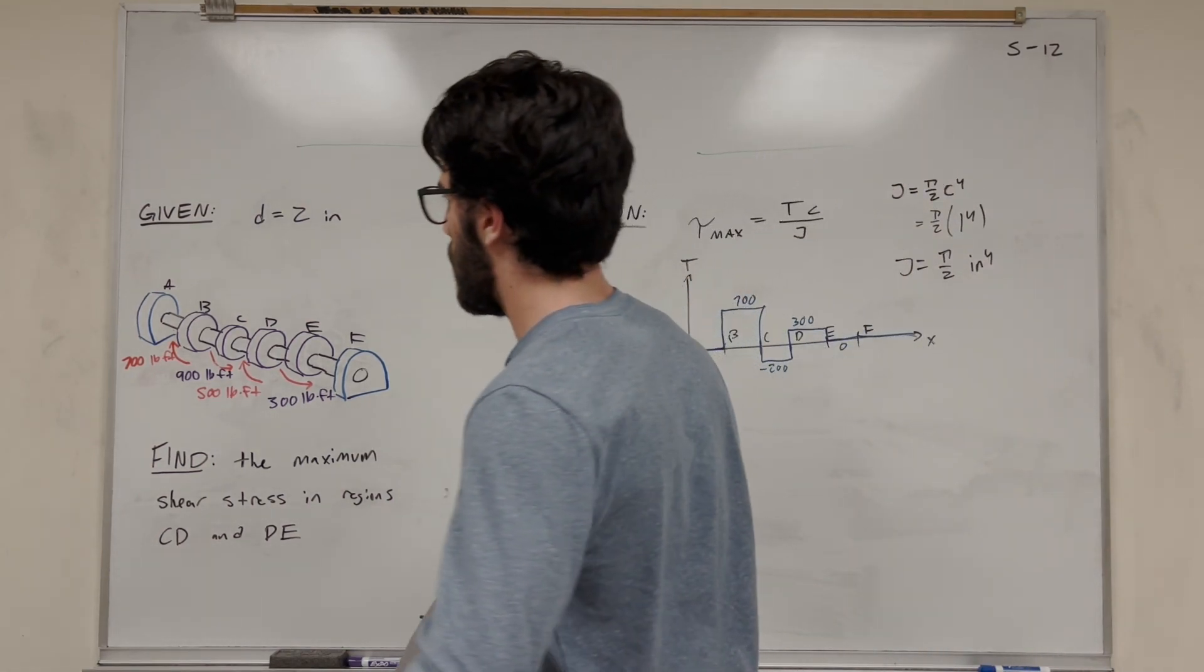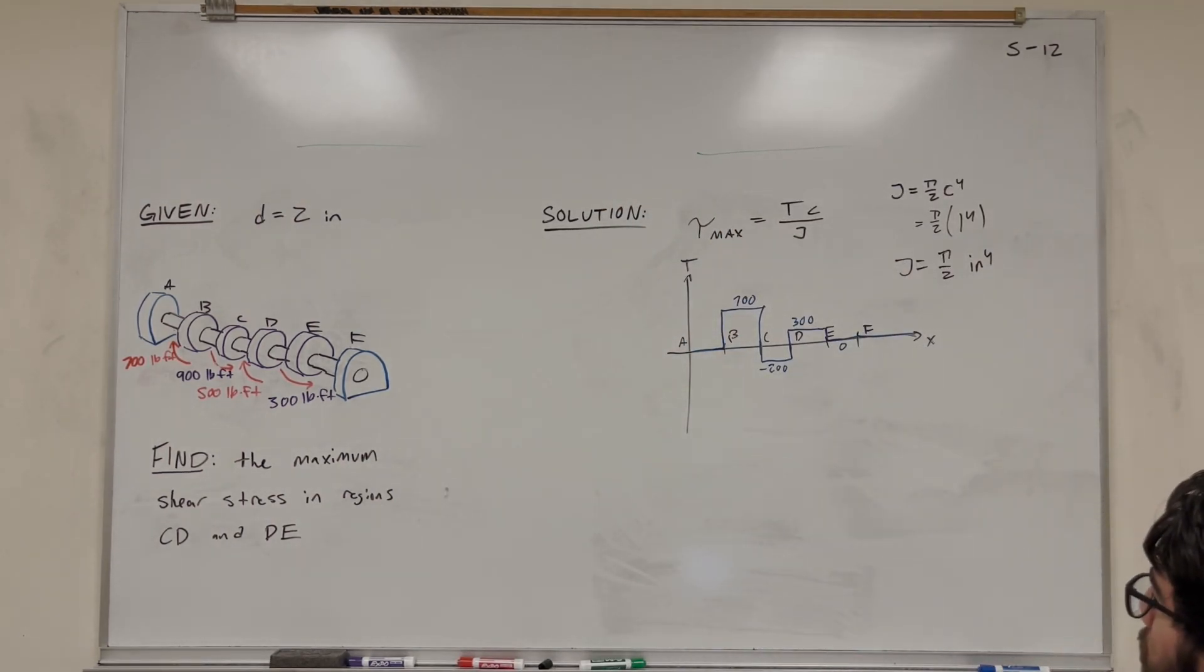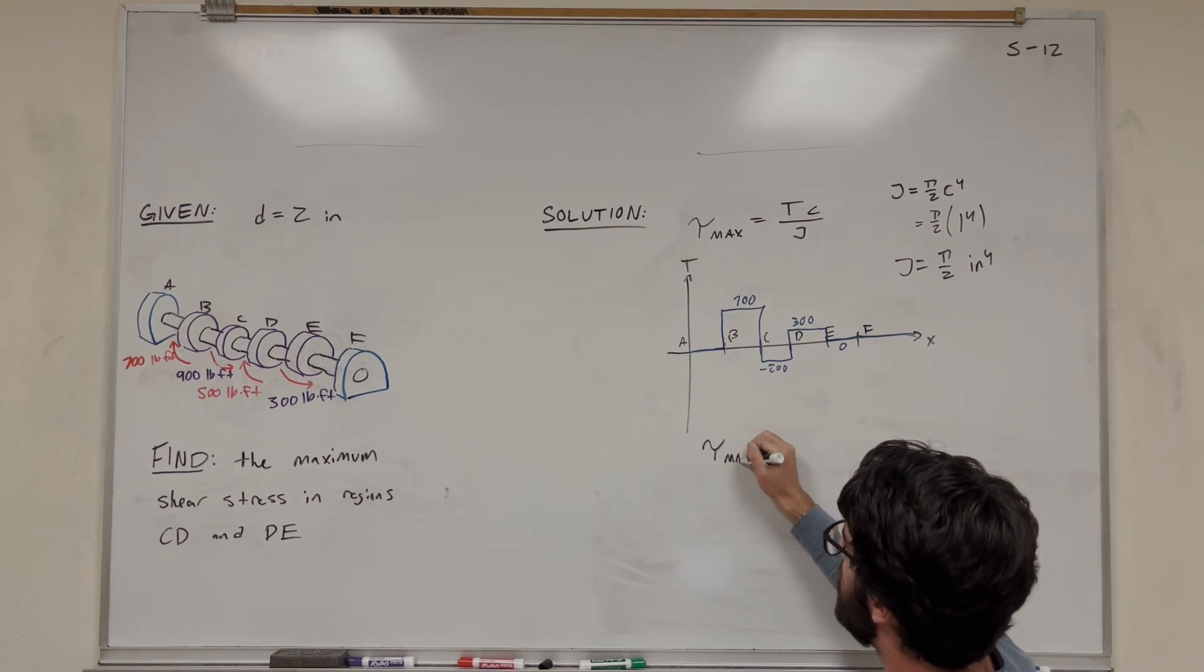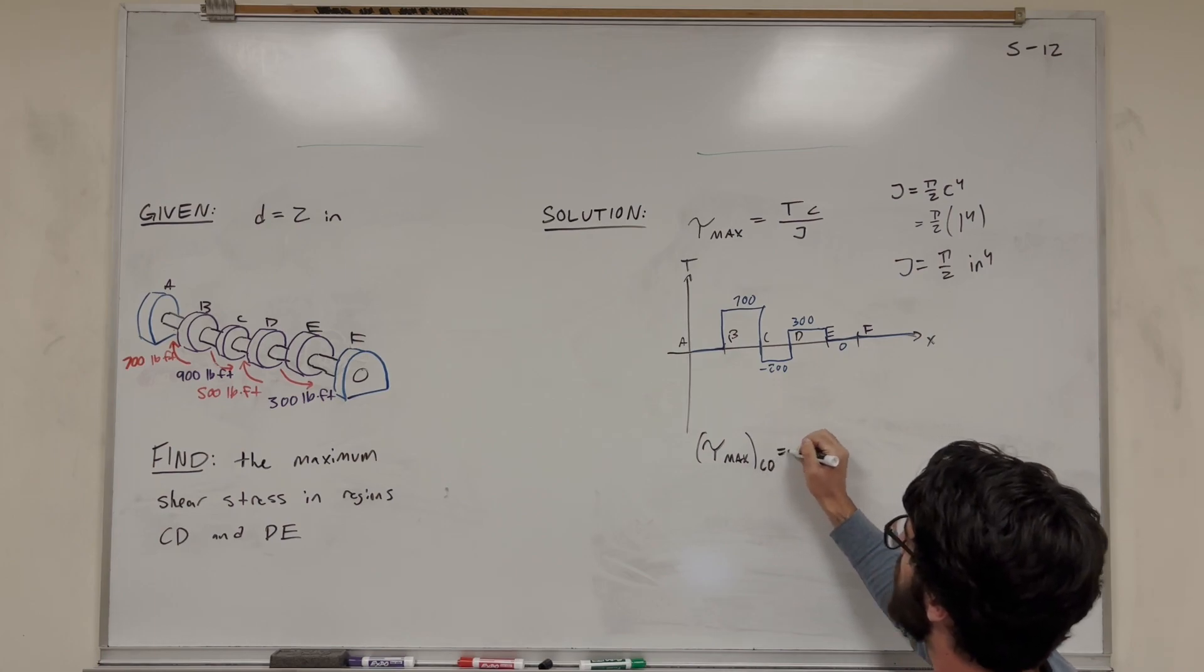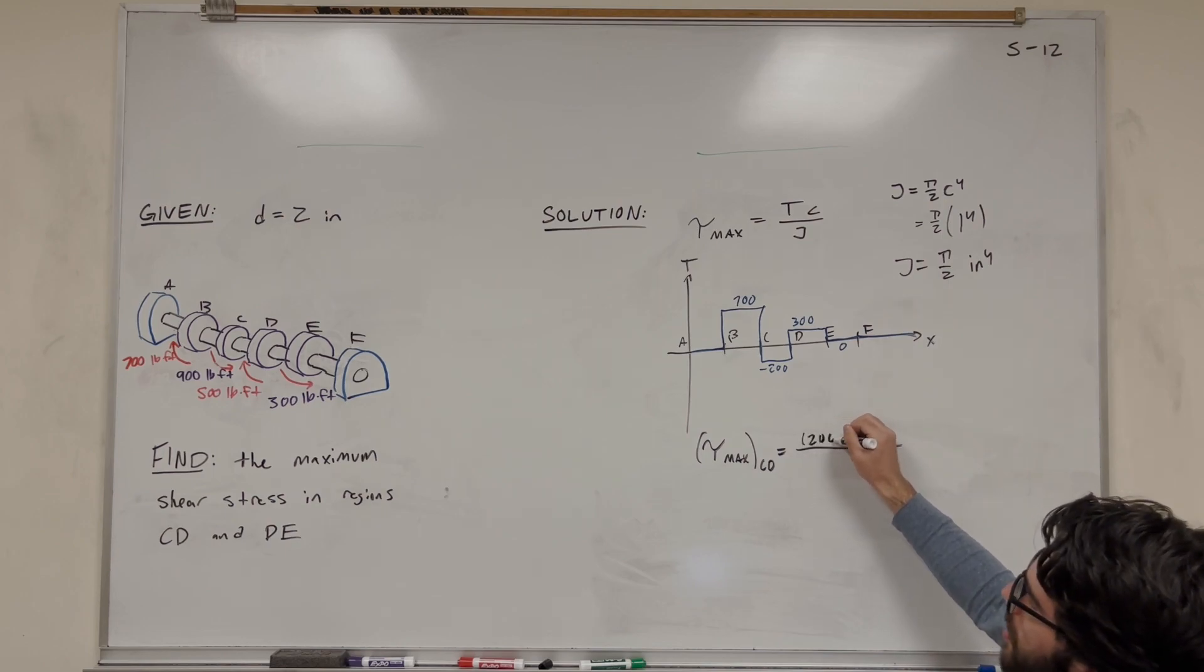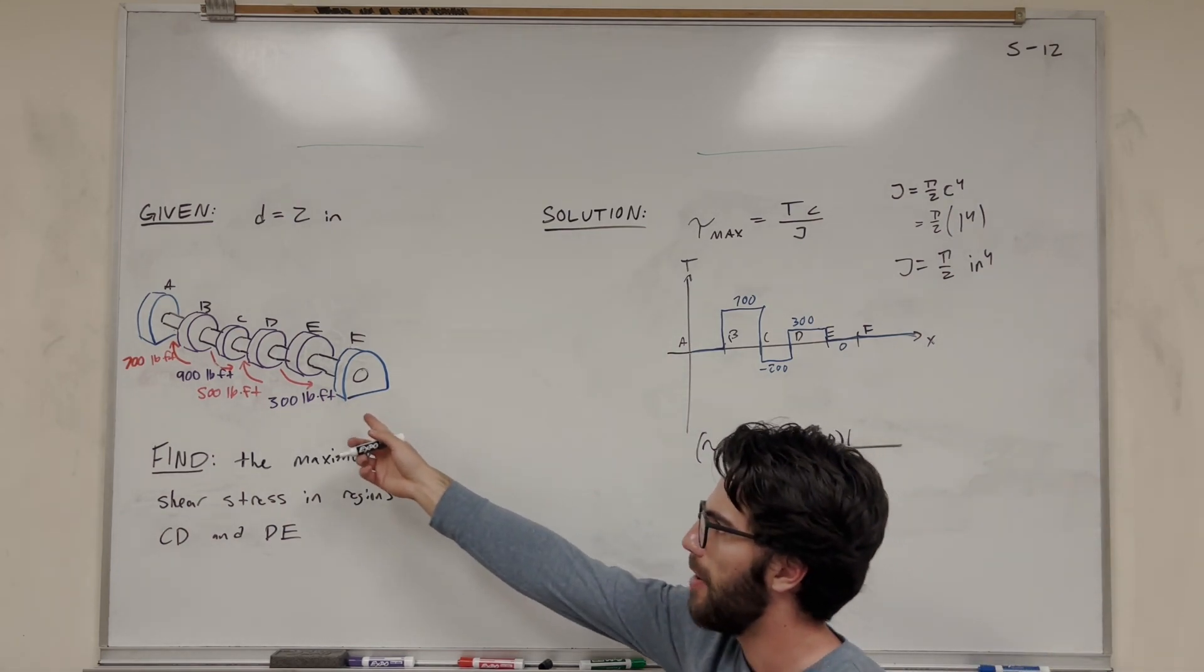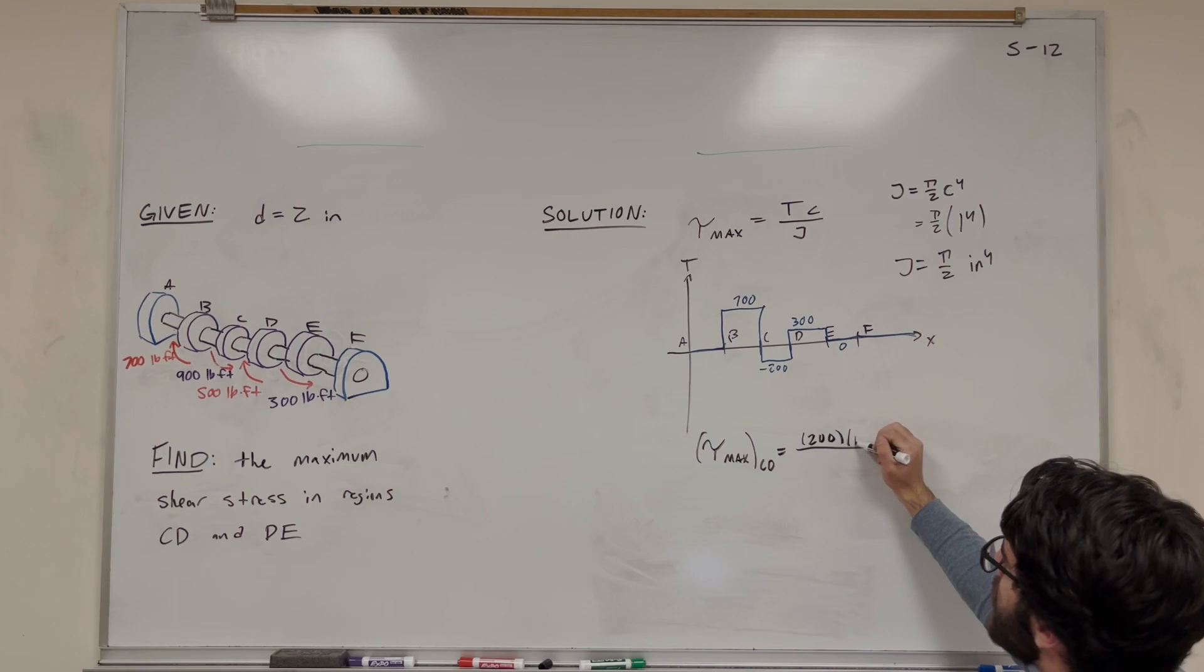So now all that's left to do is to plug it into our equation and find our answers. So starting with the first one, let's find CD. So we're going to find torque max in CD. We're going to put in that torque for CD. We're just going to make it positive because it doesn't matter if it's positive or negative. 200, this is in pound feet. So because it's in pound feet, we need to convert it to pound inches to get psi. So we're going to put a 12 here.